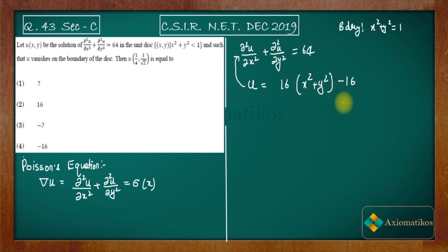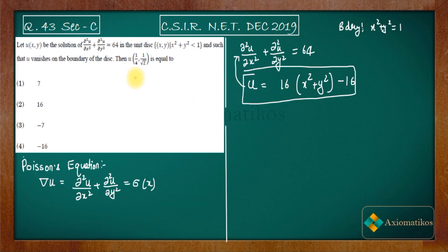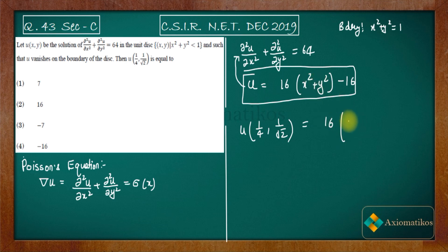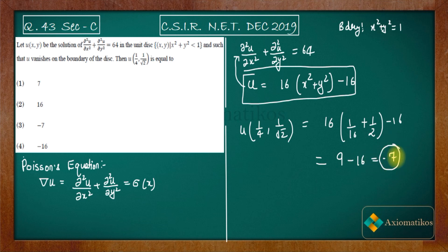Now let's calculate u(1/4, 1/√2). We get 16·(1/16 + 1/2) − 16 = 16·(9/16) − 16 = 9 − 16 = −7. So the answer is −7, which corresponds to the third option. All other options are discarded.